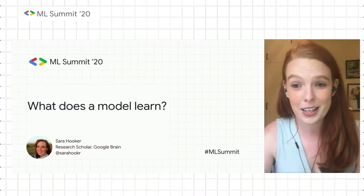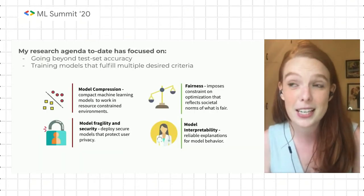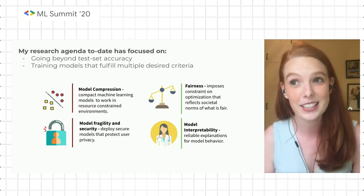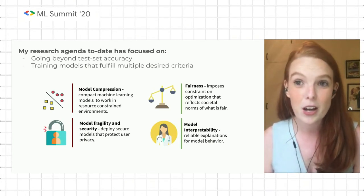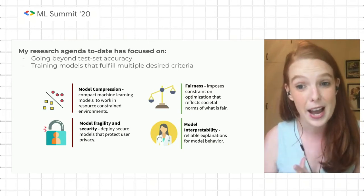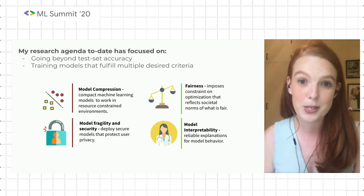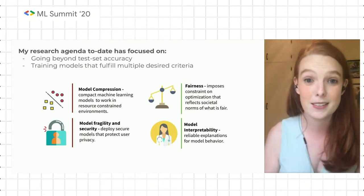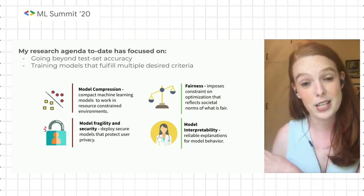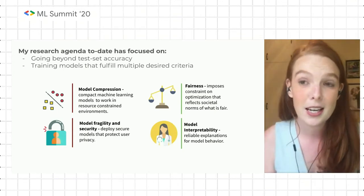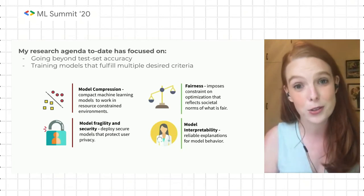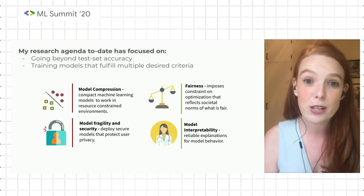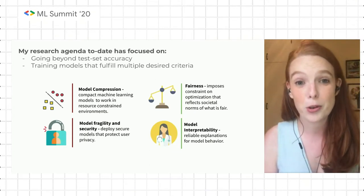I'm a researcher at Google Brain, and a lot of my research to date has focused on how do we train models beyond just tested accuracy. That often means other properties that are desirable, like being compact so we can deploy a model in resource-constrained environments, or being fair in the sense that it represents our views of how protected attributes should be treated, or being secure so the model is robust to attacks and maintains privacy. But what we're going to talk about today is my research in the area of model interpretability.